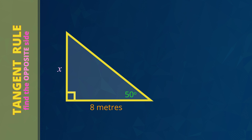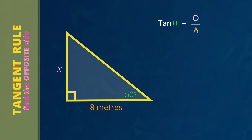Now here's a useful trick when you find the opposite side using the tan rule. If X is on the top, you times in the next line. T for top, T for times.